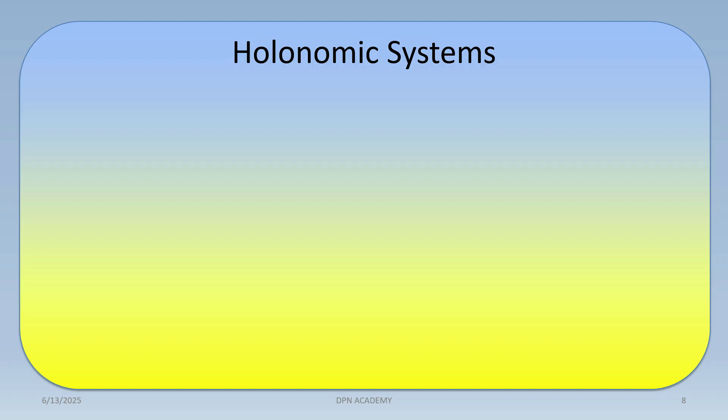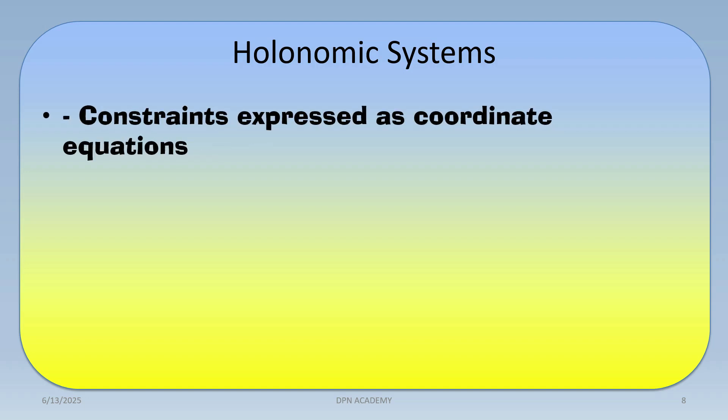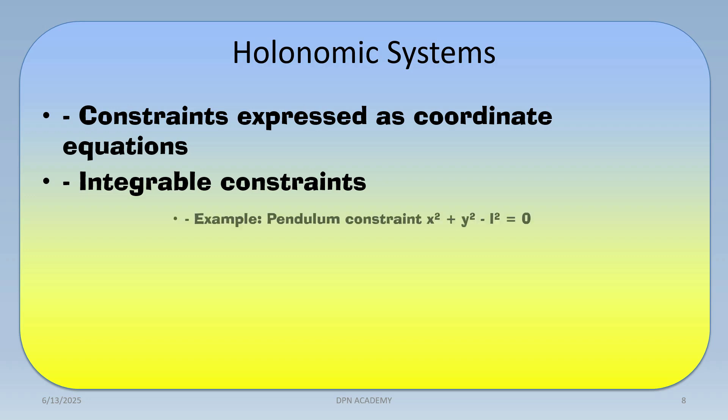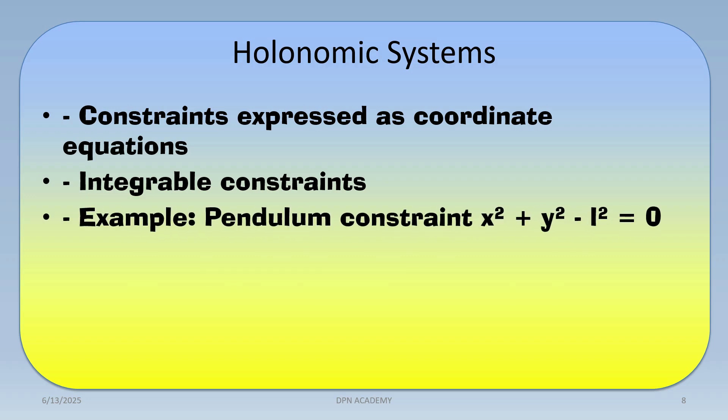Moving on to the holonomic system — this is a lengthy topic and two to three questions may be asked from it in previous year question papers. A holonomic system is one where the constraint can be expressed as a coordinate equation and the constraint is integrable. For example, the pendulum constraint x² + y² − l² = 0 can be expressed as an equation. In a non-holonomic system, constraints cannot be expressed as an equation and may depend on velocities or inequalities.